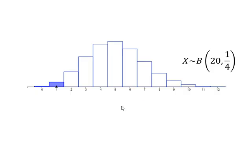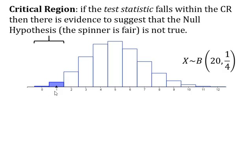A bit more vocabulary. Down here is the idea of getting very few greens — perhaps zero or one. Our critical region is going to be somewhere down here. Getting very few greens is what we would look for to provide evidence that the null hypothesis — that the spinner is fair — is not true. So the critical region is a selection of values of our random variable X where, if the test statistic falls within the critical region, there is evidence to suggest that the null hypothesis is not true.